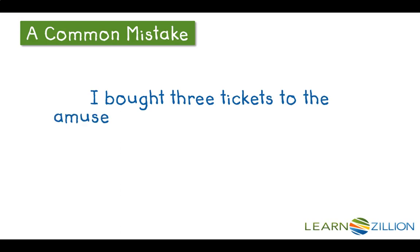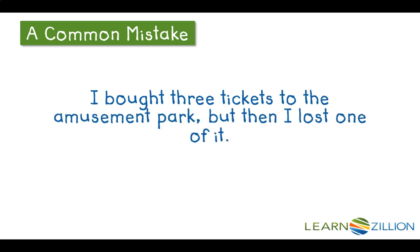Consider: 'I bought three tickets to the amusement park, but then I lost one of it.' Here's a common mistake — writers will often put a pronoun that doesn't agree with the antecedent. You lost one ticket, but it's one of the three tickets you had bought, so the pronoun isn't 'it,' which is singular; it has to be plural. The sentence should read: 'I bought three tickets to the amusement park, but then I lost one of them.'